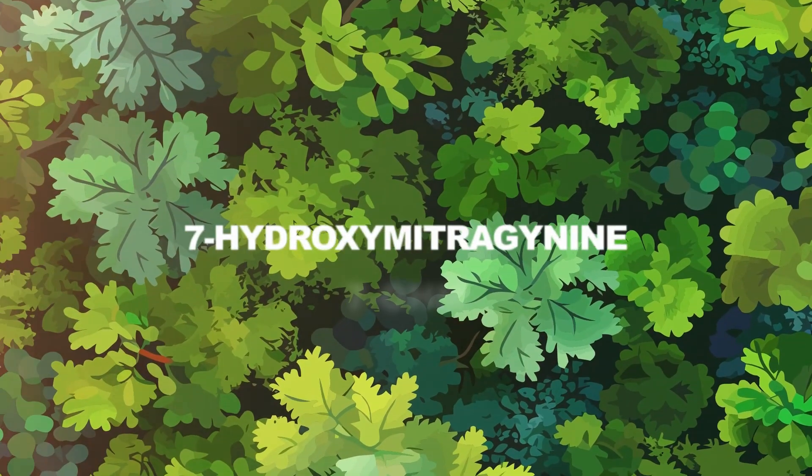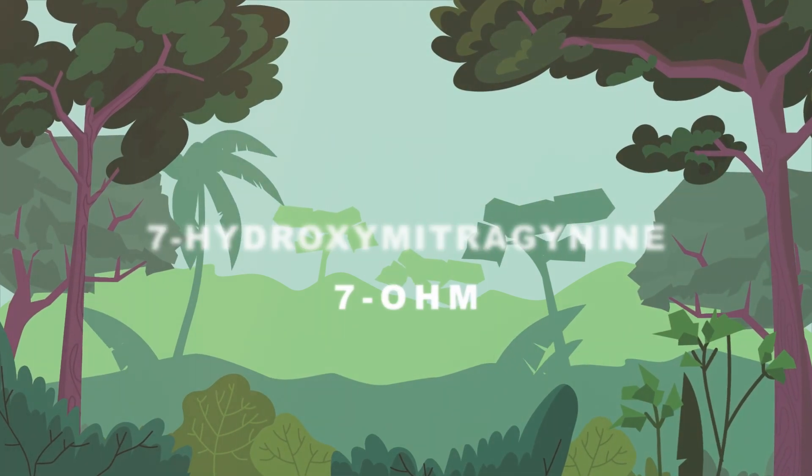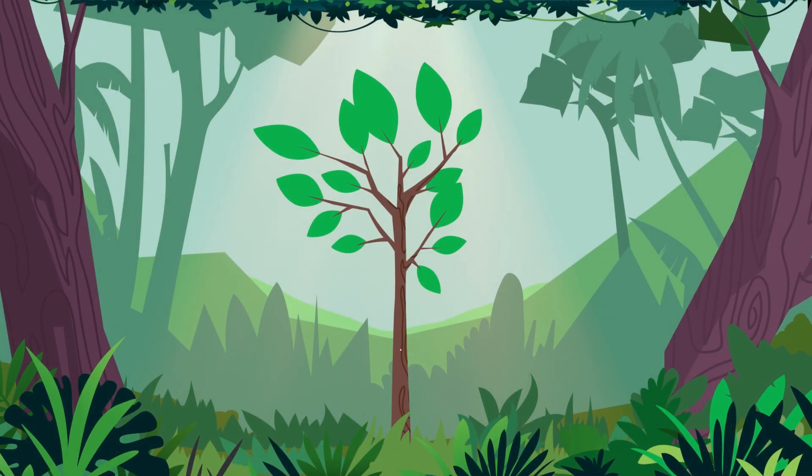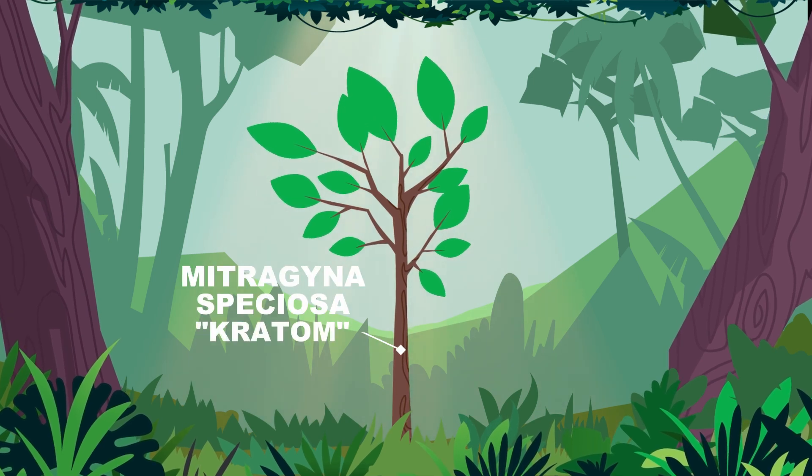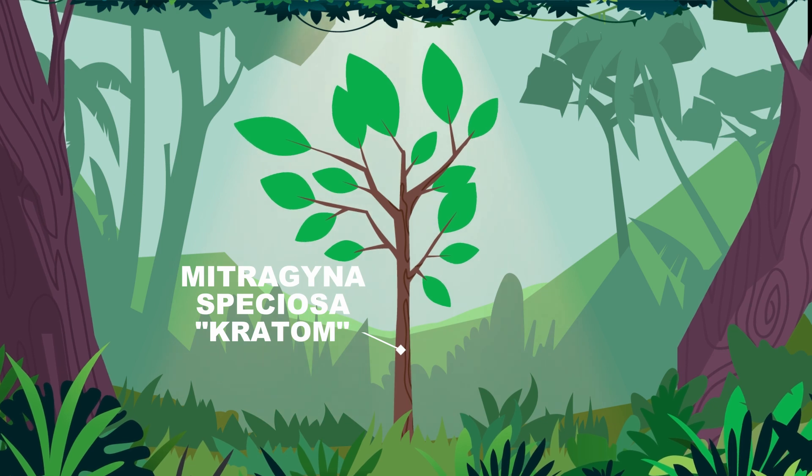7-Hydroxymitragynine, otherwise known as 7-OHM, is a natural compound known as an alkaloid found in the leaves of the kratom tree, scientifically called Mitragyna speciosa, and predominantly found in Indonesia and Thailand.